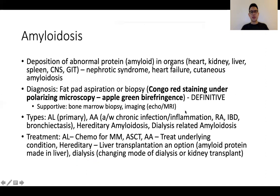Amyloidosis is a multi-systemic condition caused by deposition of abnormal protein in various organs, typically the heart and kidneys, but it can also affect other areas such as the liver, spleen, CNS, and gastrointestinal tract. Patients may present with nephrotic syndrome, heart failure, or cutaneous amyloidosis. The diagnosis is clinched based on biopsy findings, where an apple-green birefringent appearance is seen with Congo red staining under polarizing microscopy.